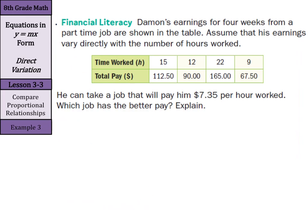Damon's earnings for four weeks from a part-time job are shown in the table. Assume that his earnings vary directly with the number of hours worked. We have time worked across the top, total pay underneath that. He can take a job that will pay him $7.35 per hour worked. What job has the better pay? Explain.